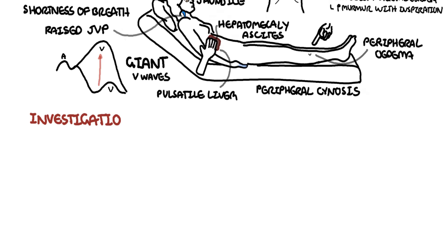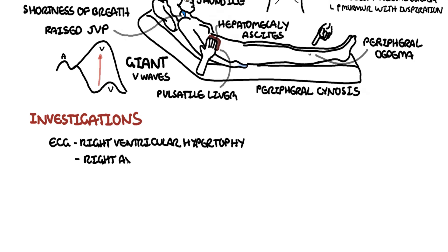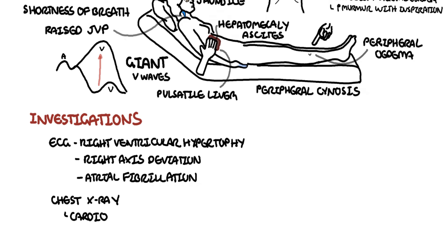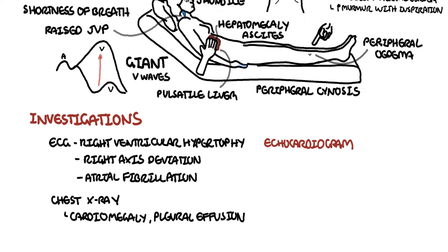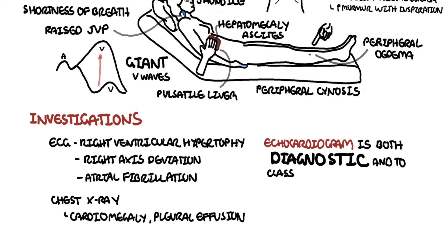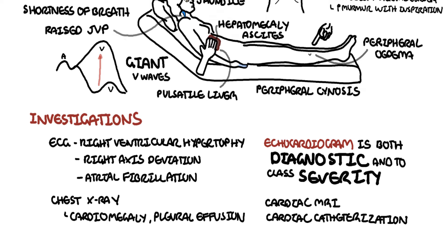Investigations include an ECG, which may show arrhythmias such as atrial fibrillation due to the dilated atrium, as well as right ventricular hypertrophy and right axis deviation. Chest X-ray is usually normal but may show cardiomegaly and pleural effusion. Echocardiogram is the main diagnostic tool for identifying TR and classifying its severity as mild, moderate, or severe. Cardiac MRI can be used if echocardiogram is suboptimal, and cardiac catheterization is indicated for accurate measurement of pulmonary pressures and evaluating coronary anatomy when surgery is indicated.